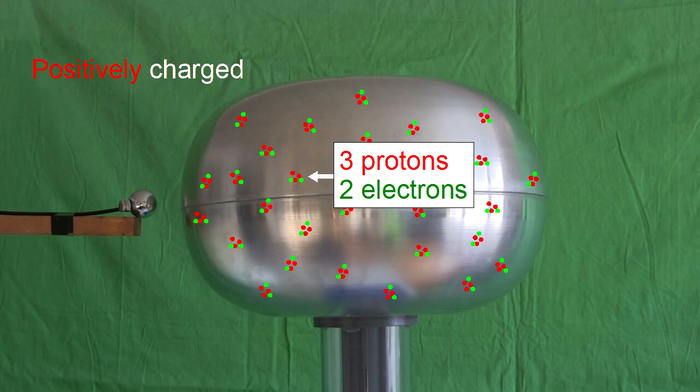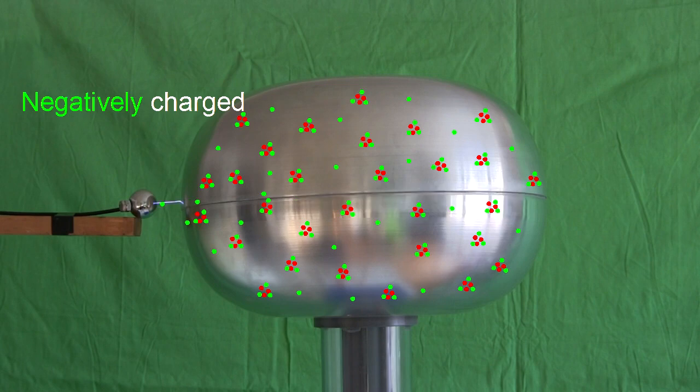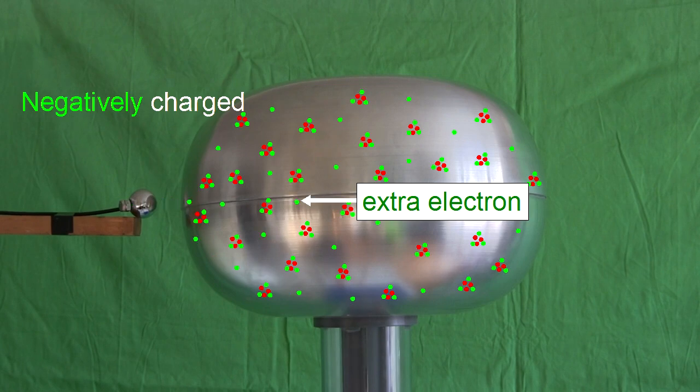If we add some electrons to a positive dome by arcing to it for example, that makes it less positive. But those electrons are quickly pulled away from the dome and the dome is back to being positive again. The same is true if we were taking electrons from a negative dome. New electrons are quickly put back on it to make it negative again. There's an endless supply of charge and it's constantly being replenished.